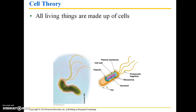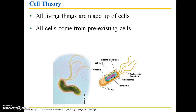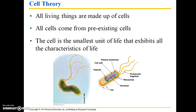To refresh your memory — I did touch upon this in the first lecture — cell theory states that all living things are made up of cells. All cells come from pre-existing cells; that means they don't just arise spontaneously, they arise from other cells. And the cell is the smallest unit of life that exhibits all the characteristics of life. So an individual cell displays all of those seven properties of life.